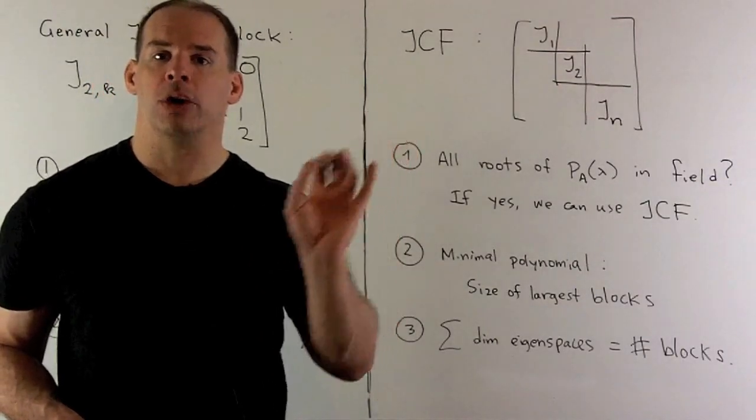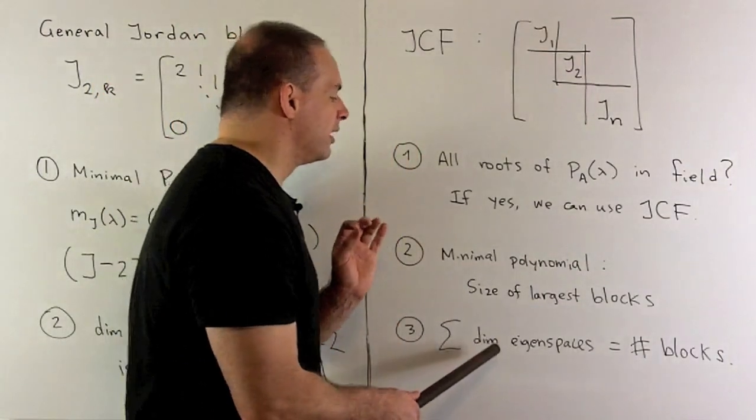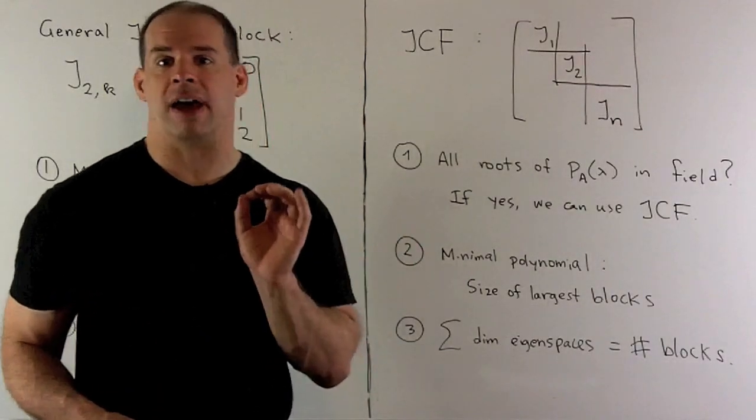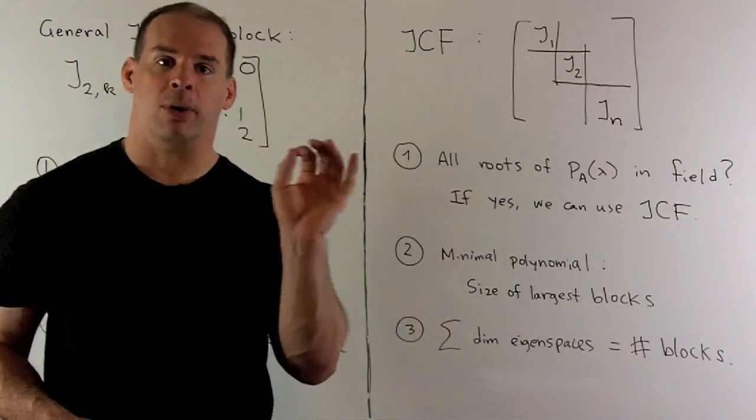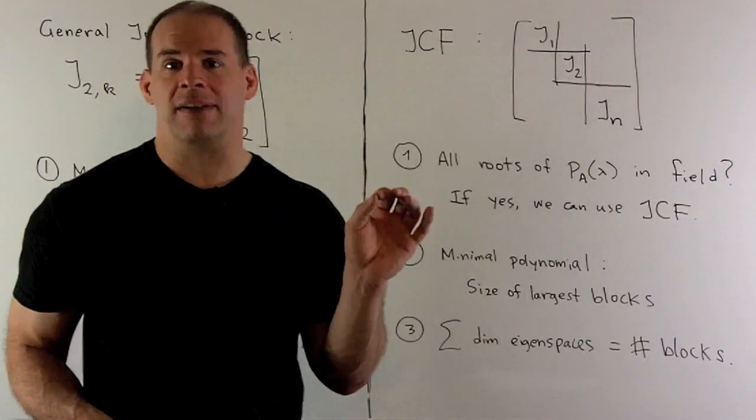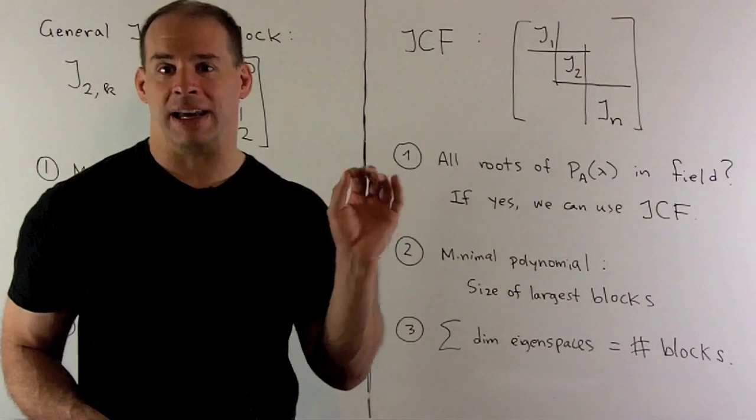The total number of blocks used is going to be the sum of the dimension of the eigenspaces for each eigenvalue. The number of blocks we use for each eigenvalue is just the dimension of the corresponding eigenspace.